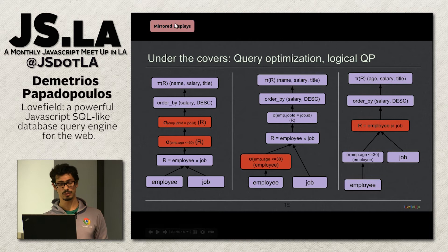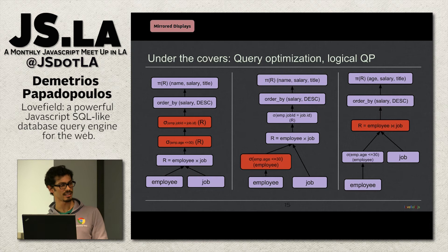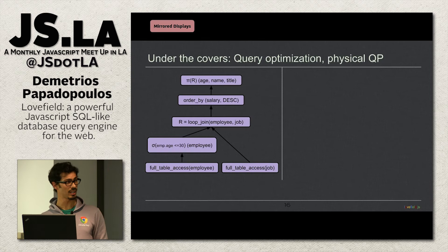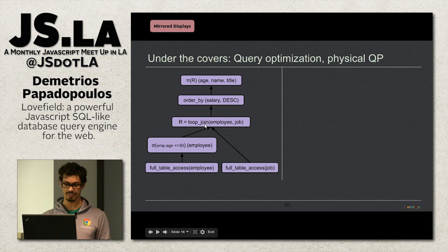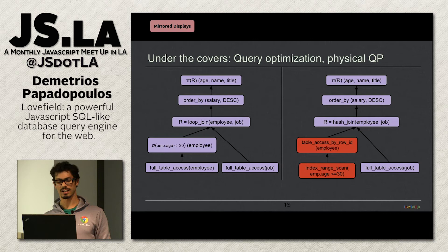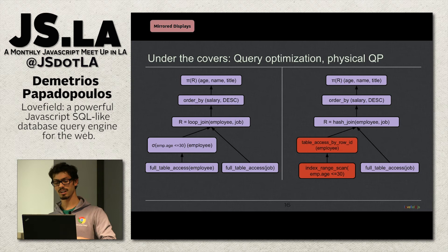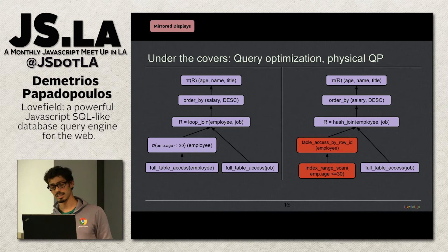The next step combines the remaining predicate with the cross product to create a join node — only joining employee rows that match the job ID from the other table. In the physical query plan, relations are explicitly loaded via full table access, and the join is specified as a nested loop join. If there's an index on the age field, the optimizer uses an index range scan to bring only rows with age less than 30 into memory — far faster than the initial plan.